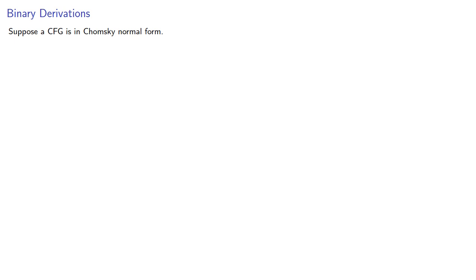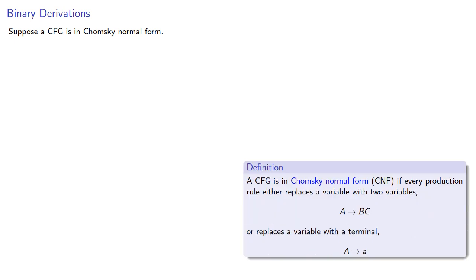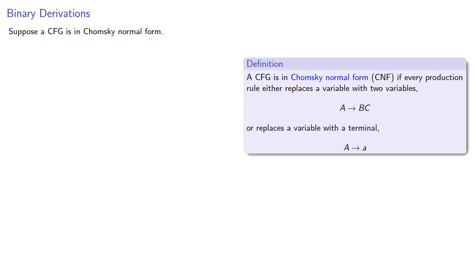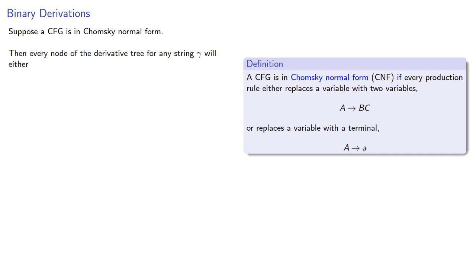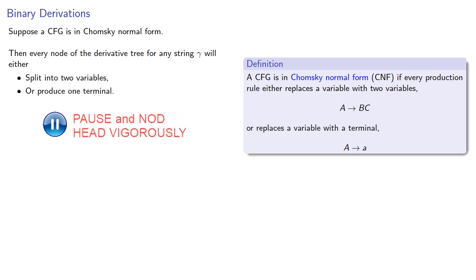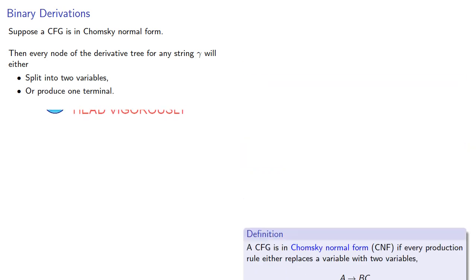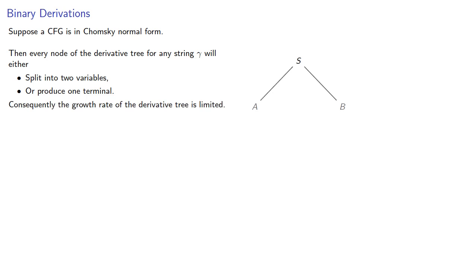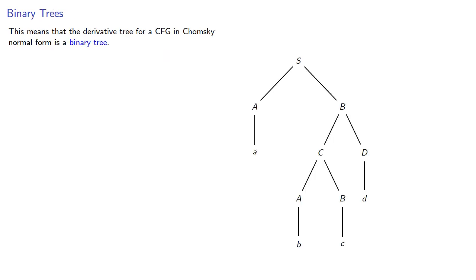Suppose a context-free grammar is in Chomsky normal form. Remember, that means every production rule either replaces a variable with two variables or replaces a variable with a terminal. Then every node of the derivative tree for any string gamma will either split into two variables or produce one terminal. Consequently, the growth rate of the derivative tree is limited, and the derivative tree for a context-free grammar in Chomsky normal form is a binary tree.